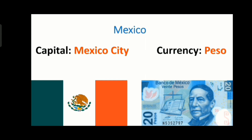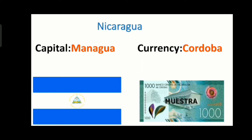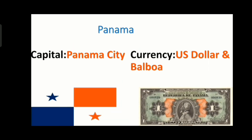The next country is Mexico and its capital is Mexico City and its currency is Peso. The next country is Nicaragua and its capital is Managua and its currency is Córdoba. The next country is Panama and its capital is Panama City and its currency is US dollar and Balboa.